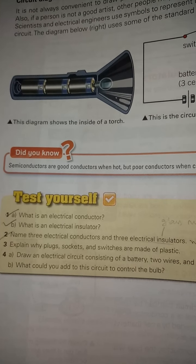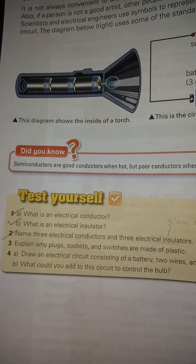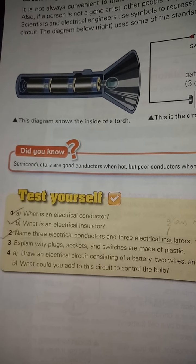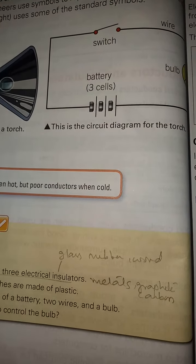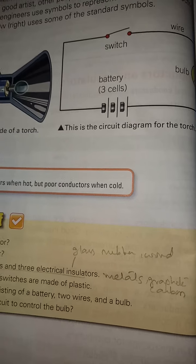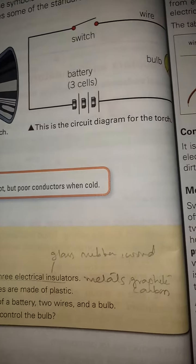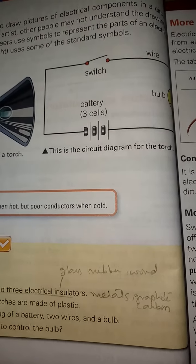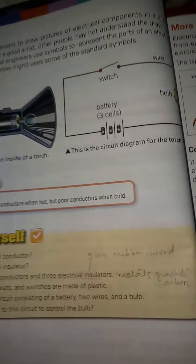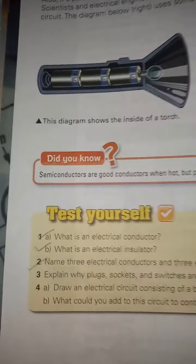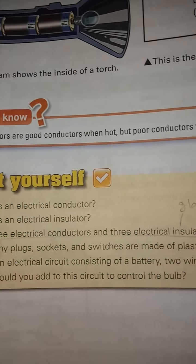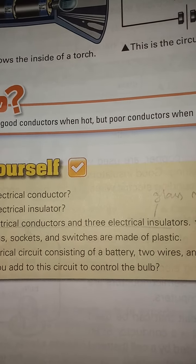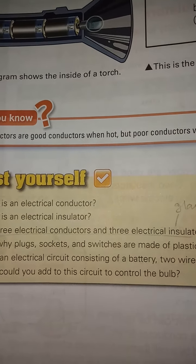Question two: name three electrical conductors and three electrical insulators. Electrical conductors are metal, graphite, and carbon. Electrical insulators are glass, rubber, and board.